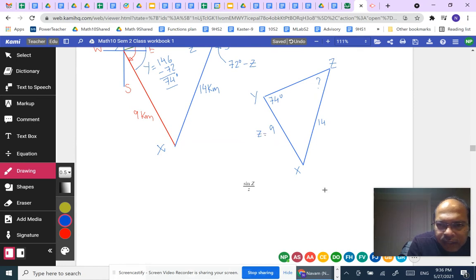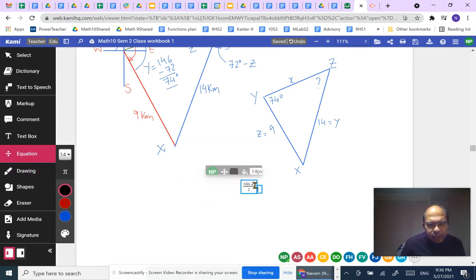The 14 is small y because it's opposite the angle Y. And of course, the side opposite X is little x. So coming back to the equation that we are writing, sine Z by z can be equated to something that we know, sine Y by y.